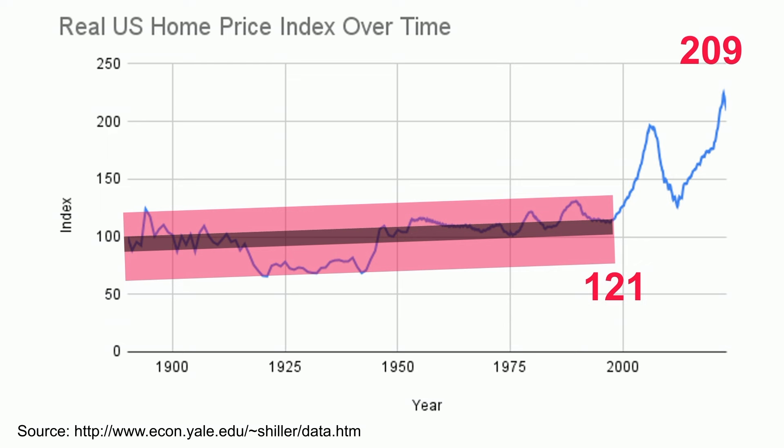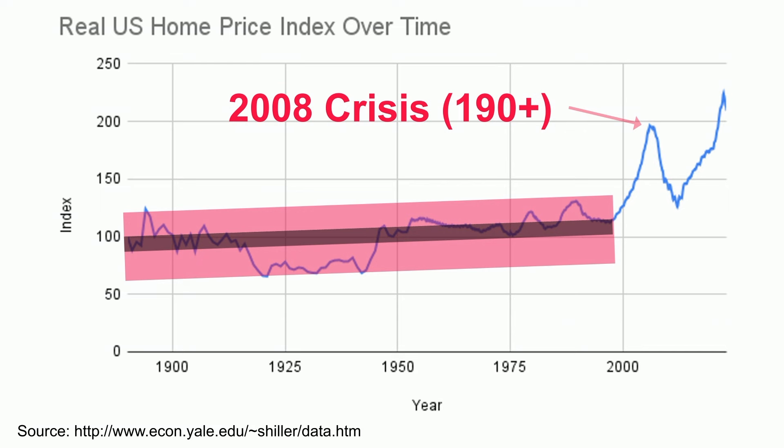Also, please note for context: this is actually not the first time the home price index has blown past the established variance since 1990. The previous peak broke the 190 mark and was associated with the 2008 financial crisis.